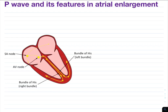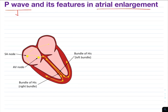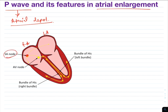In this ECG video, we will discuss the P wave and its features in atrial enlargements. The P wave is due to atrial depolarization. To understand the genesis of the P wave, we need to know that it results from depolarization of the right atrium and left atrium. Depolarization starts from the pacemaker cells of the SA node, which is present in the right atrium, so the right atrium is depolarized first.